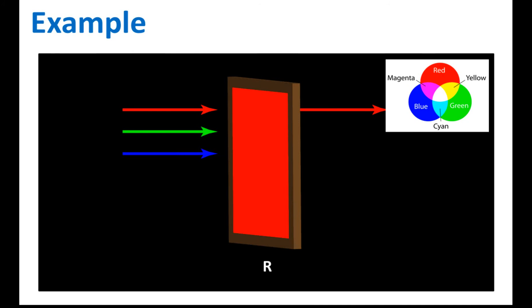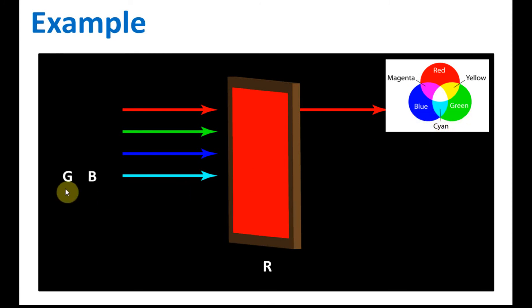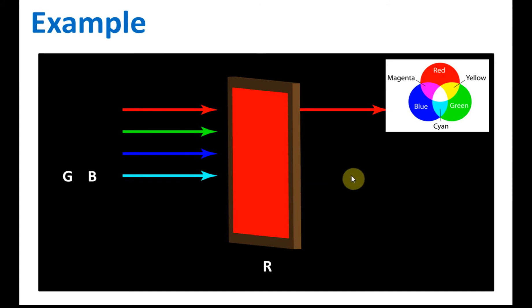What about secondary colors? If the light coming in is cyan — from the diagram we know that cyan is the combination of blue and green. However, the green and blue will both be blocked by the red filter because they are not the same color as the filter. So no color will come out — 100% of the light will be blocked.